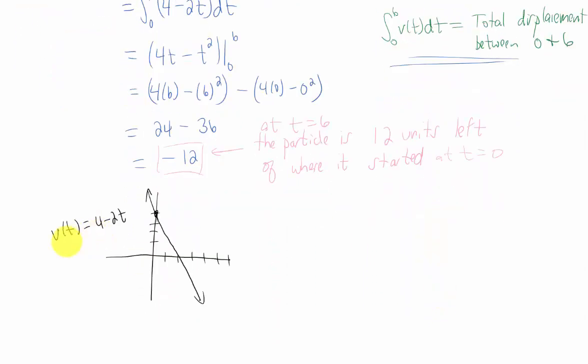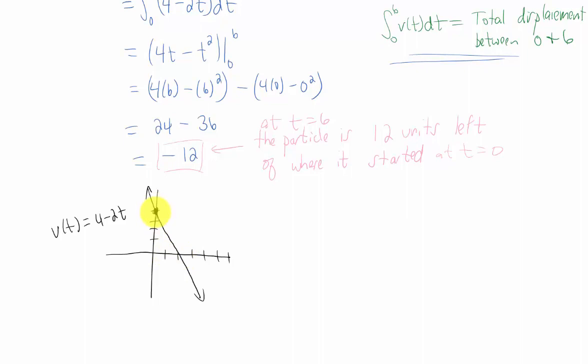If we graph our velocity function 4 minus 2t, we know that this has a y-intercept of 4 and a slope of negative 2. And when the velocity of a particle is positive, as it is between time equals 0 and 2, that means that particle is moving to the right. When the velocity of a particle is negative, that means that that particle is moving to the left.